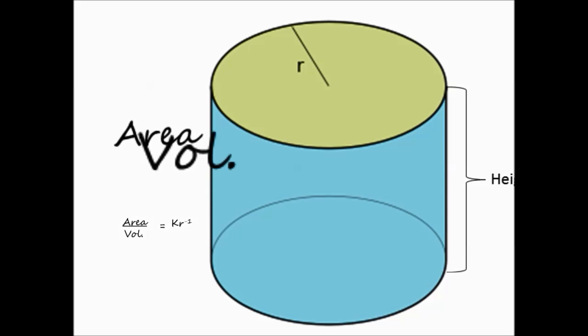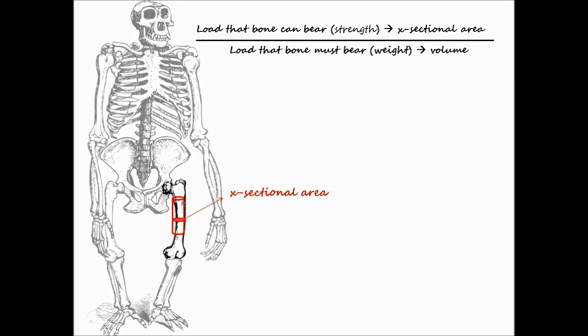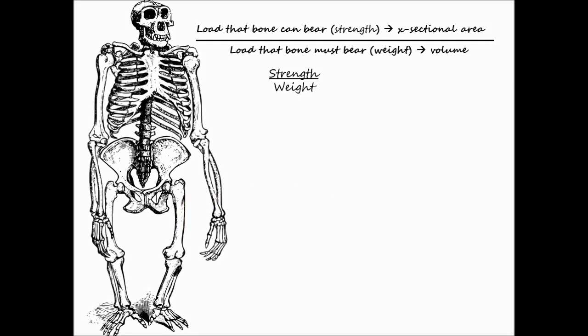A cylinder is a good approximation for the middle segment of a bone. The load that this bone can bear, its strength, depends on its cross sectional area. Now if this were a gorilla bone, say a femur, then the load that it must bear would depend on the weight of the gorilla and thus its volume. Therefore, the strength to weight ratio is essentially the ratio of bone cross sectional area to gorilla volume. And this has to exceed 1 for the gorilla to be able to stand up. Considerably exceed if it has to do more than just stand up.